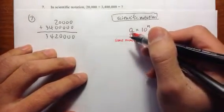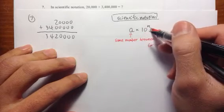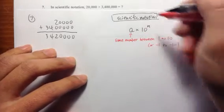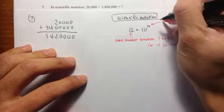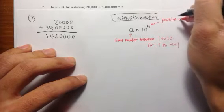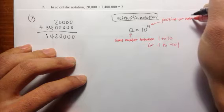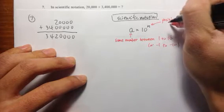So some number a times 10 raised to the sum power n. And the n right here, this has to be either positive or negative whole numbers.